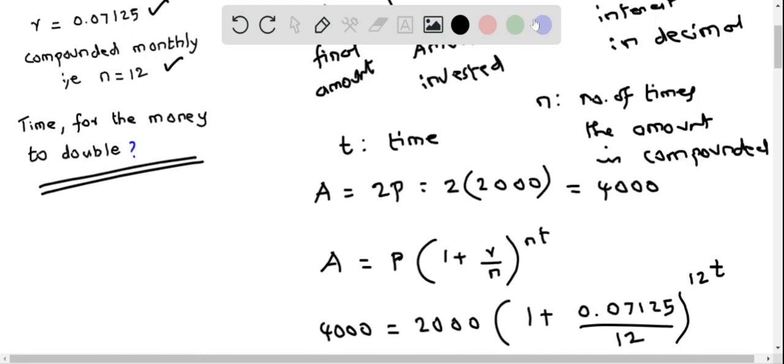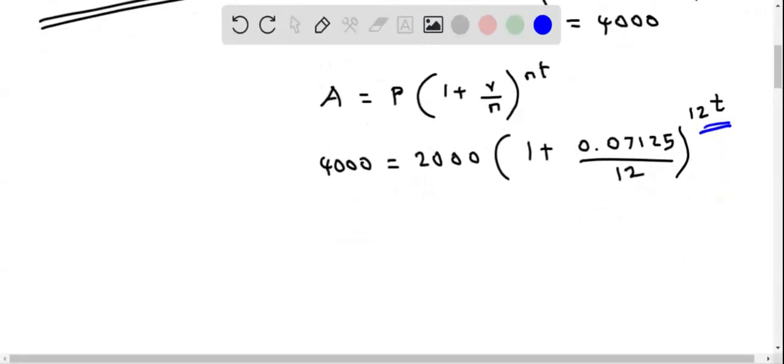We need to solve for t. First, divide both sides by 2,000. This gives 2 equals the remaining expression. We have to divide 0.07125 by 12 first. Computing this gives 0.0059375, so we get 2 = (1 + 0.0059375)^(12t).